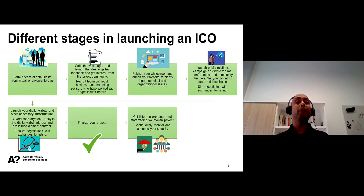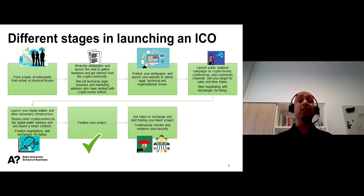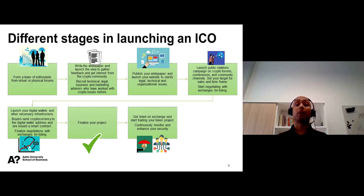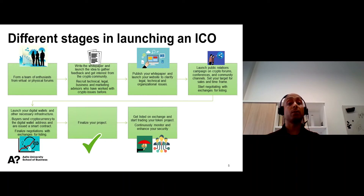The fifth step is to launch the digital wallets and other necessary infrastructure where buyers can send cryptocurrency and are issued a smart contract. During this stage, it is very important to finalize negotiations with exchanges for the listing of crypto tokens.